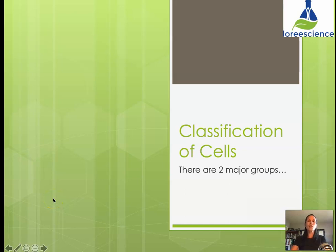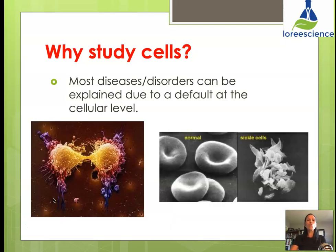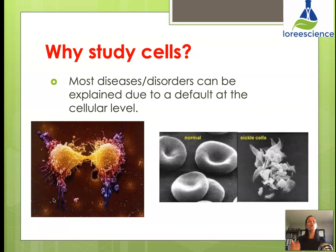In this lesson we're going to look at the classification of cells and the two major groups they fall into. First and foremost, why is it important to study cells in biology? Most disorders and diseases can actually be traced back to individual cells. A lot of times it's damage at the cellular level that causes side effects at both the organ and organ system level. The underlying rule in all biology is: structure dictates function.